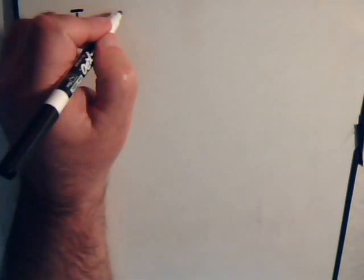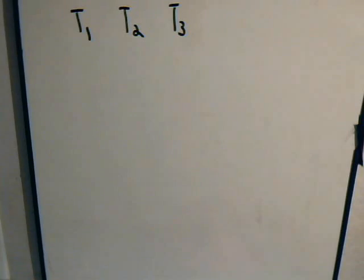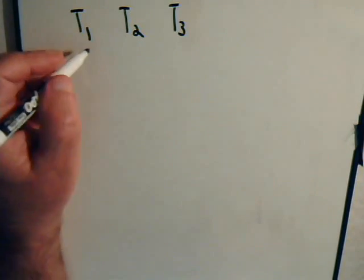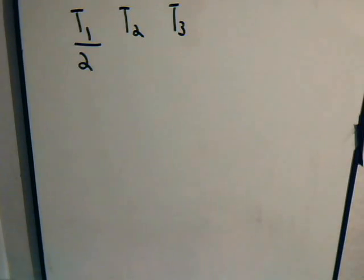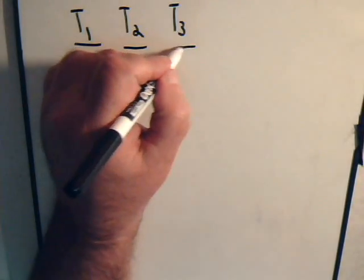Suppose that we had a coin and we just flipped it three times. What's the probability of obtaining two heads? We can think of task one — flip the coin — task two — flip the coin — task three — flip the coin. When we perform each task, there are two possible outcomes: heads or tails.